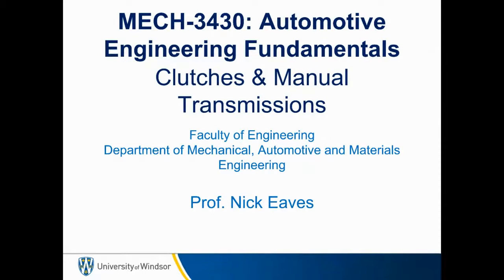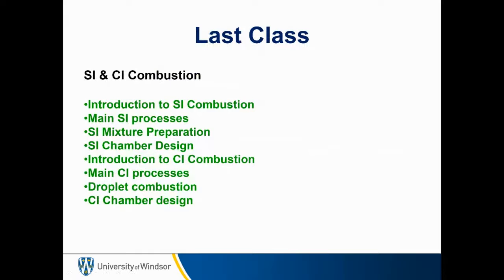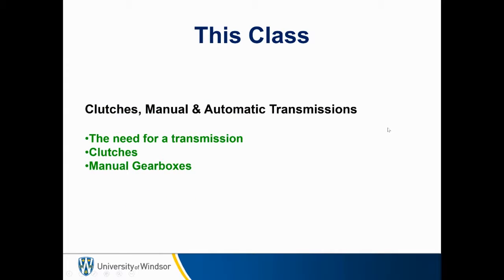Hello everyone and welcome to the fifth lecture in MEC 3430 Automotive Engineering Fundamentals. We're now going to leave internal combustion engines behind and focus on other systems in modern automobiles. In this lecture we're going to look at clutches and manual transmissions. Last class we looked at spark ignition and compression ignition combustion, how the mixture is prepped and also chamber design. Now in this class we're going to look at the need for transmissions, what a clutch is and why it's needed, and what goes into the design of a manual gearbox.